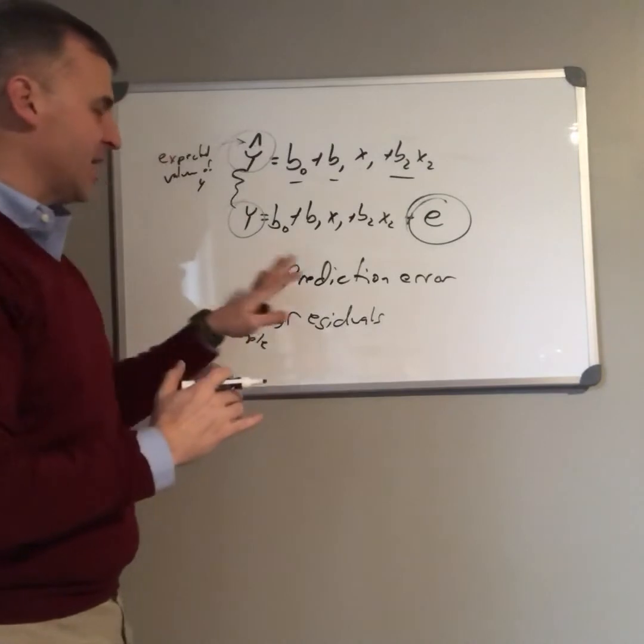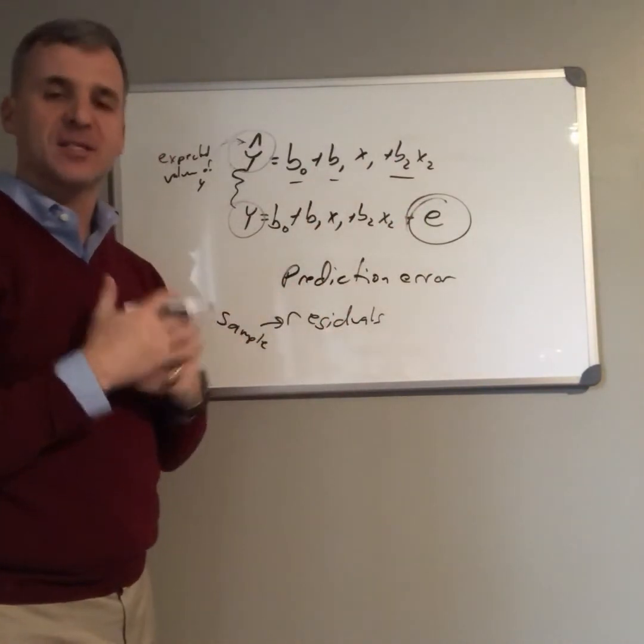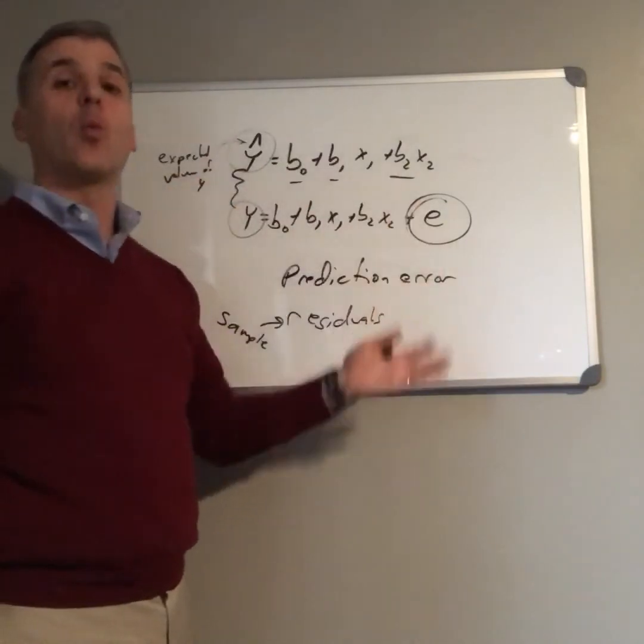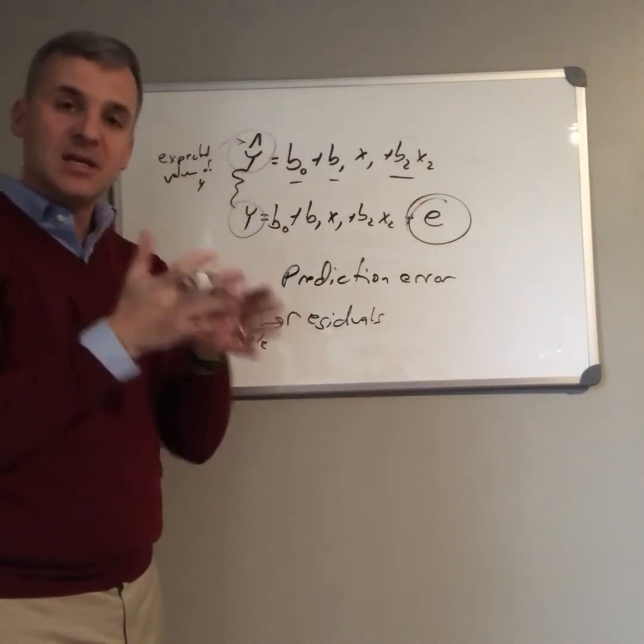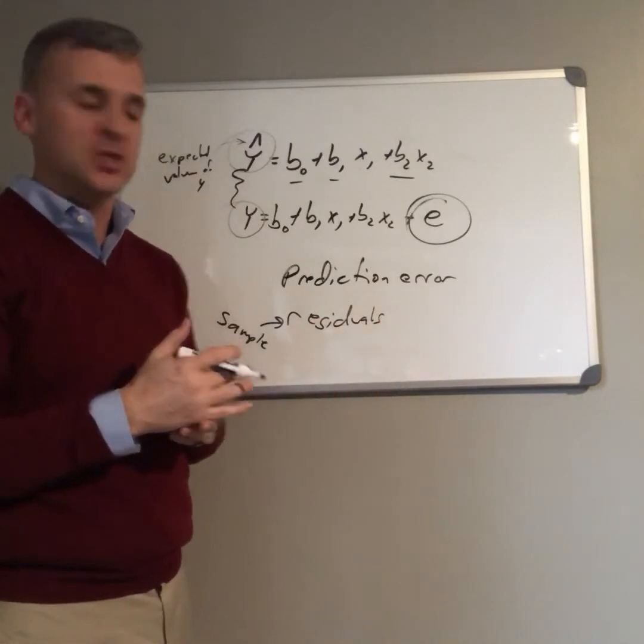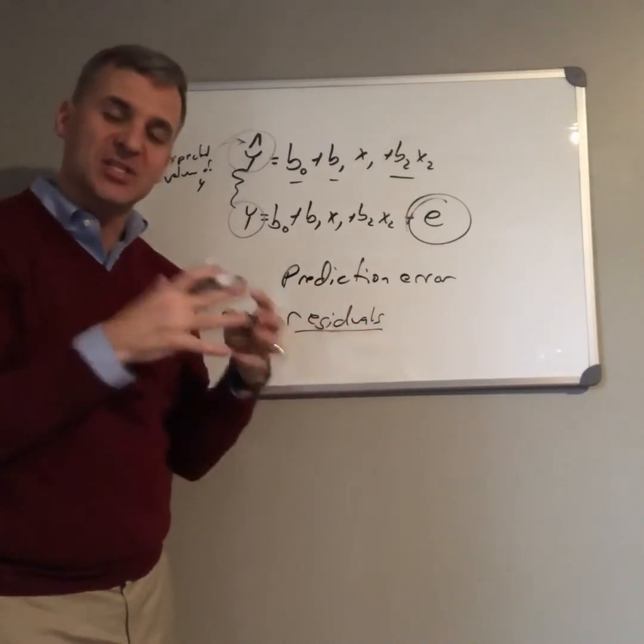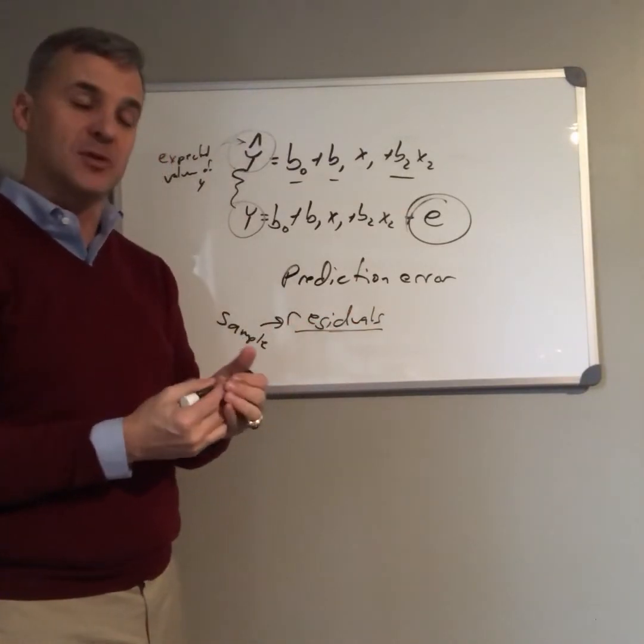The difference here in prediction error is it's based on some unobservable things. It's how different our estimate would be for the entire world, the entire population, not just for our sample. We can't really know that because we can't measure the entire population. A residual refers to that prediction error that occurs just inside of our sample, so we can measure that.